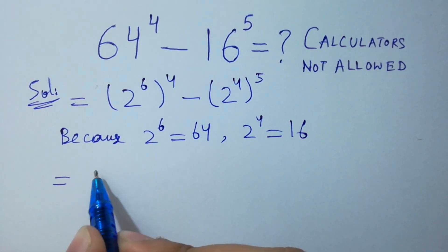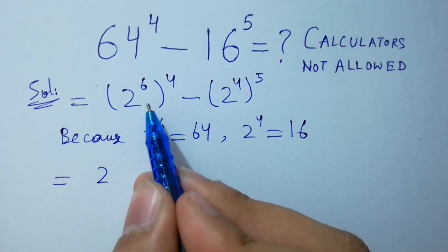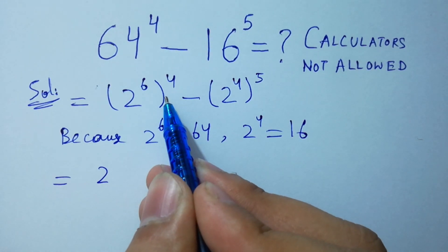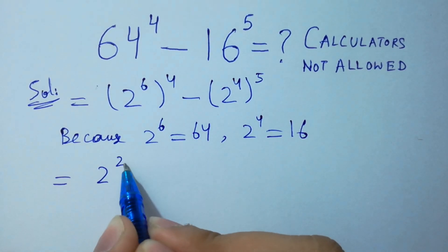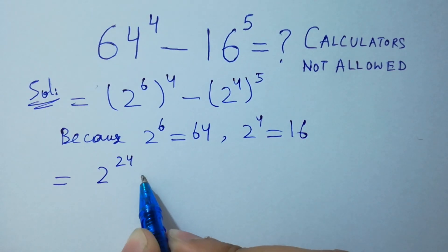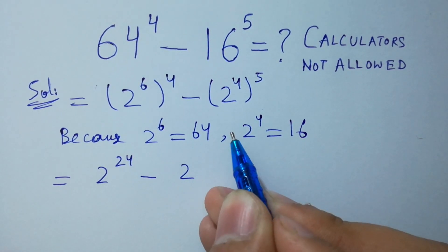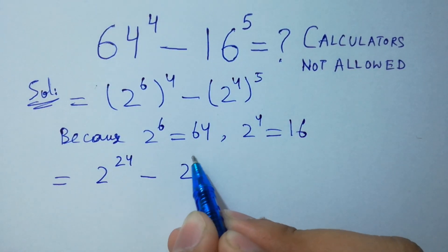Next step: 2 to the power 6 times 4 equals 24, minus 2 to the power 4 times 5, which equals 20. So we have 2 to the power 24 minus 2 to the power 20.